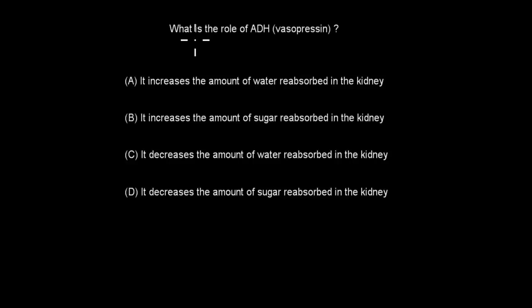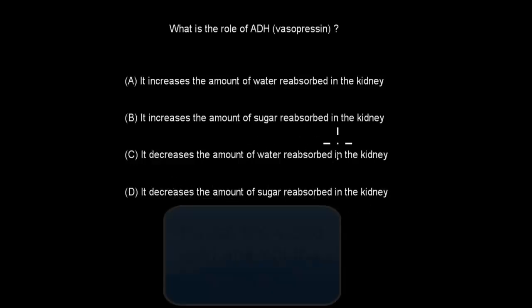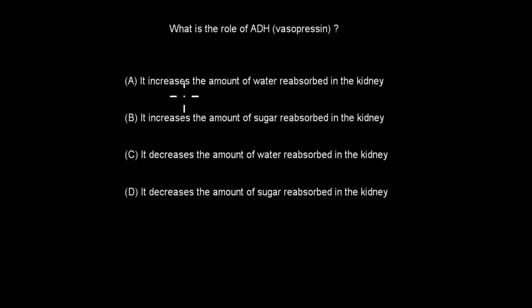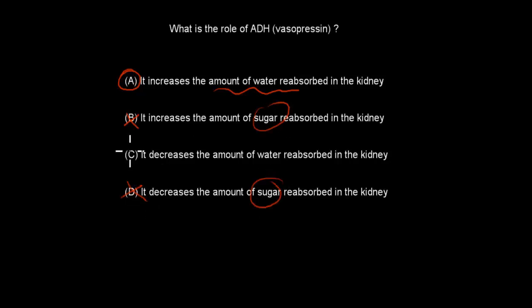Next question: What is the role of ADH vasopressin? A: It increases the amount of water reabsorbed in the kidney. B: It increases the amount of sugar reabsorbed in the kidney. C: It decreases the amount of water reabsorbed in the kidney. D: It decreases the amount of sugar reabsorbed in the kidney. The correct answer is A, because ADH helps us to reabsorb water. B and D are incorrect — it has nothing to do with sugar. C is incorrect because it increases, not decreases, water reabsorption.